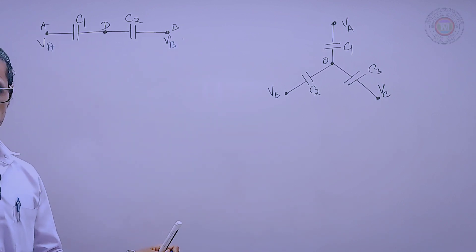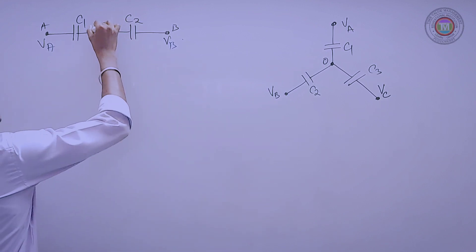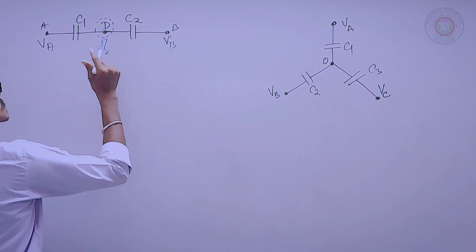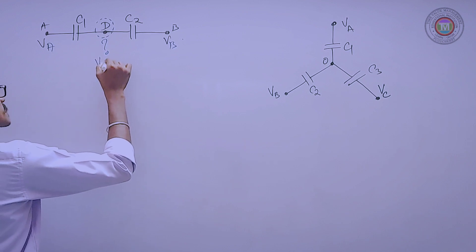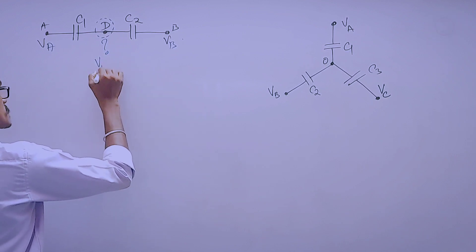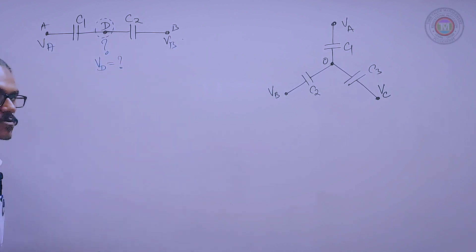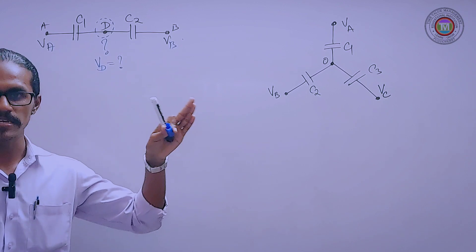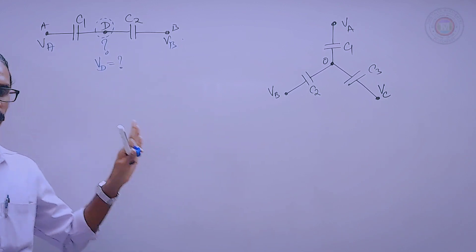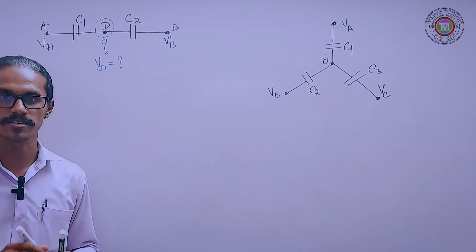So you want to express what is the potential of this point? Just for our convenience we will consider it as VD, and at the point D it is VD. What is the potential of VD in terms of VA and VB and C1 and C3? How to express this variation?